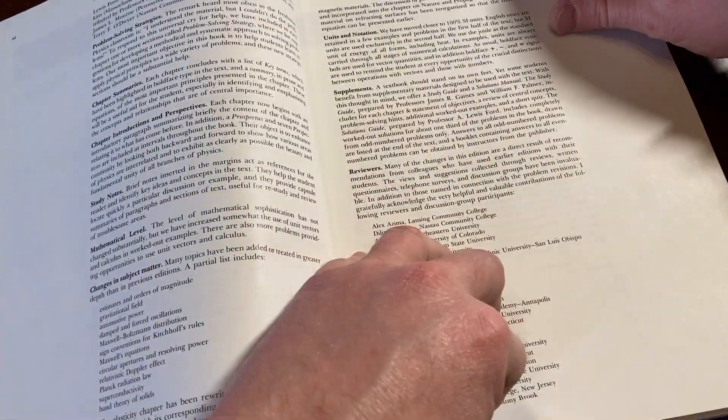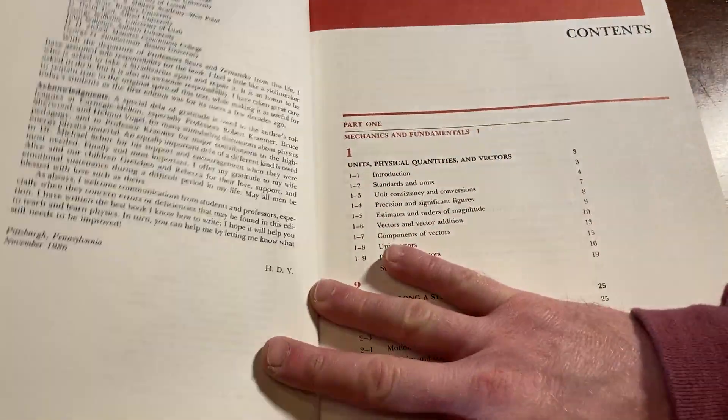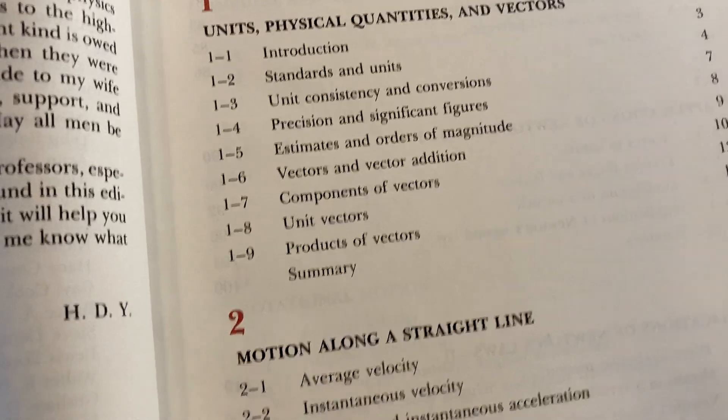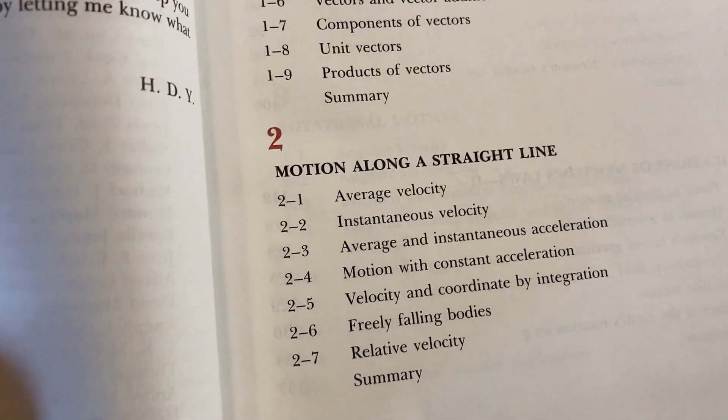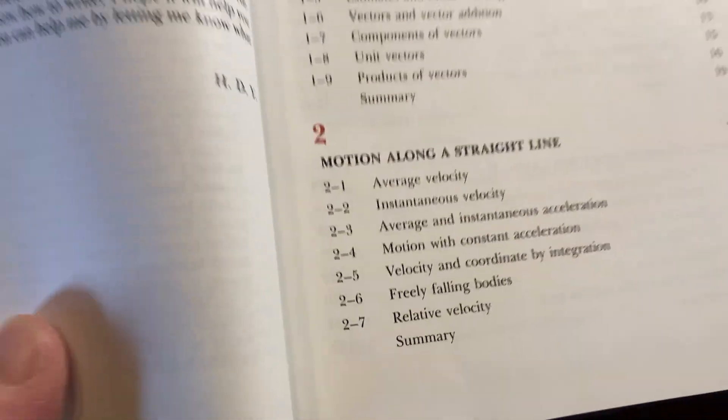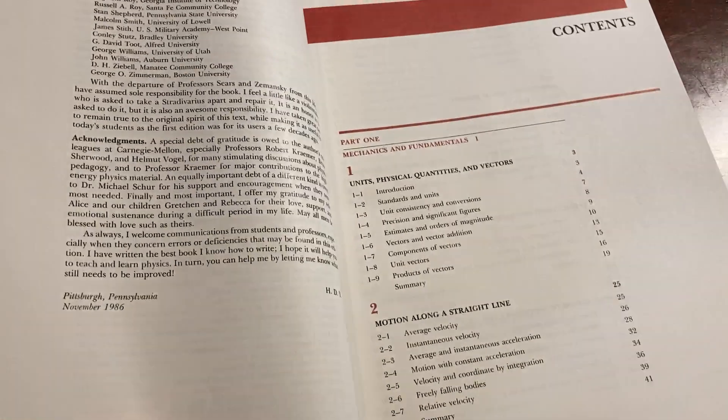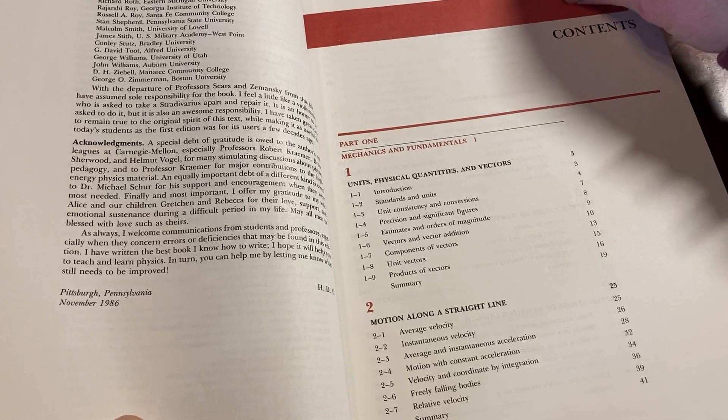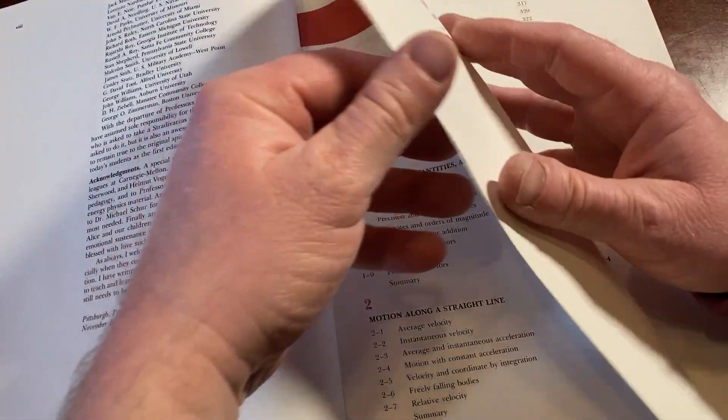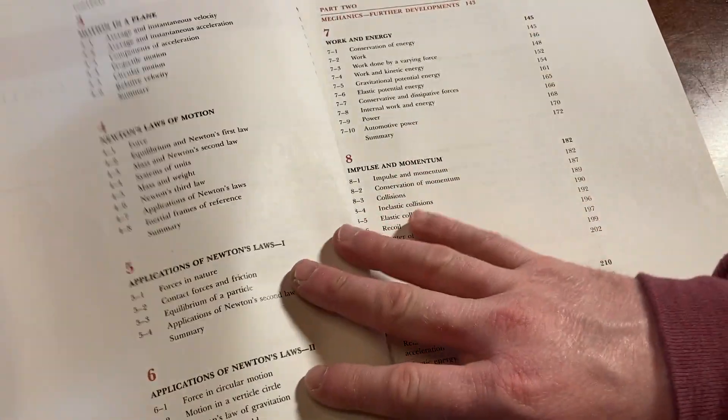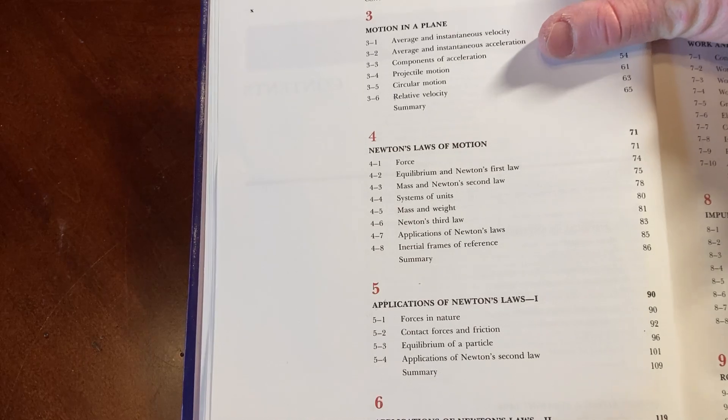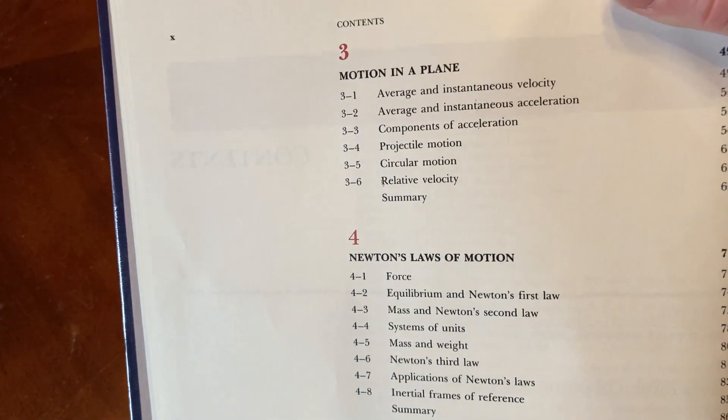Let's take a look at the contents of this book and see what we got. It starts with units, physical quantities, and vectors. Motion along a straight line, average velocity, instantaneous velocity. A lot of these things you study in calculus. I think, for me, one of the struggles with physics was I took physics together with calculus at the same time, and I had a very hard time with just basic algebra. My math was just not very good, and I struggled hard. I made it. I did okay.